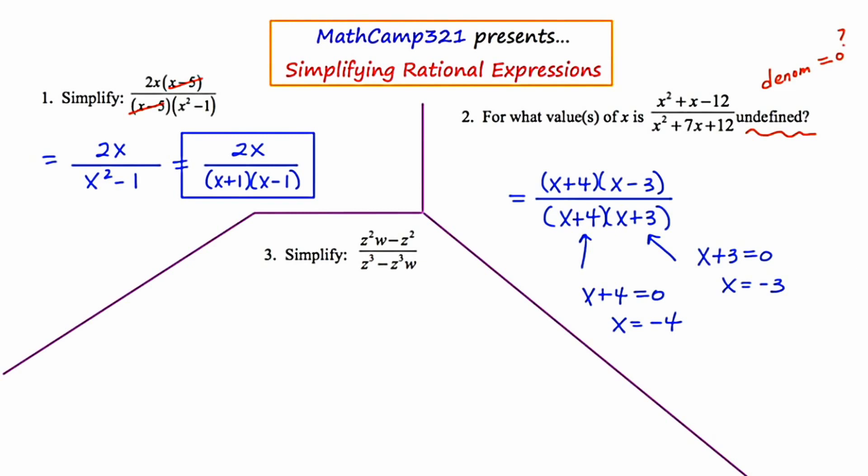So I think that if we were to allow x to be either negative 3 or negative 4, you're going to end up with 0 in the denominator. And something divided by 0, of course, is undefined. So I think these are the two answers.